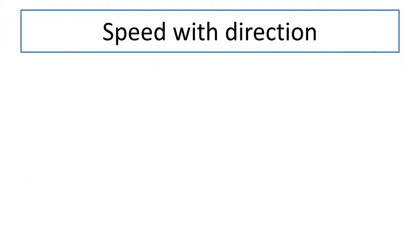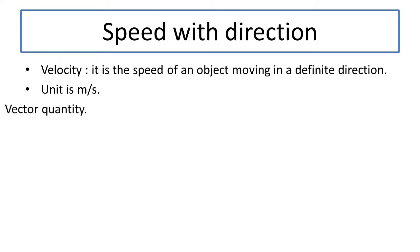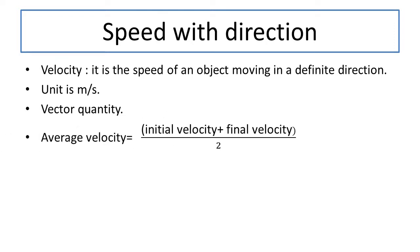Speed with direction is called velocity. Velocity is the speed of an object moving in a definite direction — the direction in which we are moving defines its velocity. Its unit is meter per second. Mathematically, velocity is the distance covered in a specific direction per unit time taken. It has both magnitude and direction, therefore velocity is a vector quantity. Average velocity is defined as initial velocity plus final velocity divided by 2, expressed as (u + v) / 2.